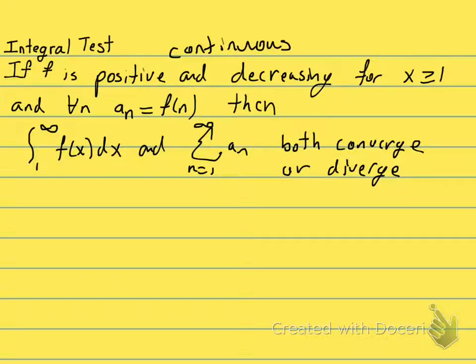If f is positive, continuous, and decreasing for x greater than or equal to 1, and for all n, aₙ is equal to the function at the integers, f(n),